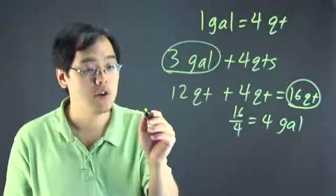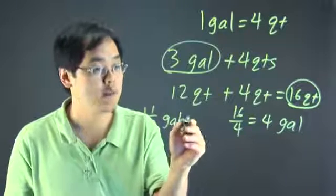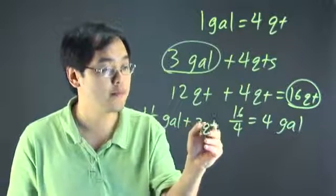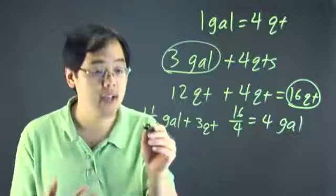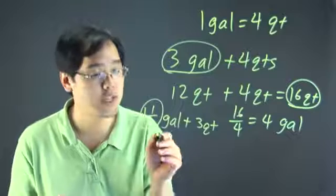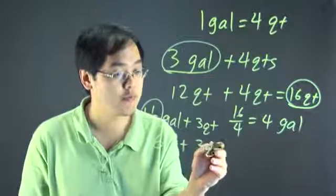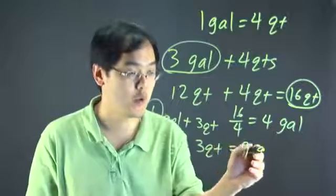Now suppose you have one and a half gallons plus three quarts. Again, take the gallons first, one and a half, multiply them by four. One and a half times four is going to give you six, so it'll be six quarts plus three quarts, and that's going to give you nine quarts.